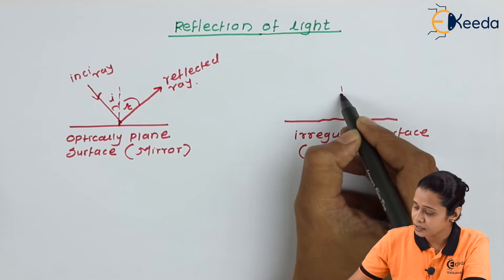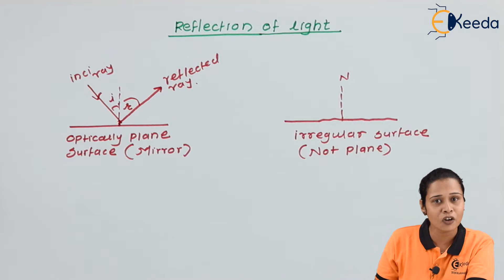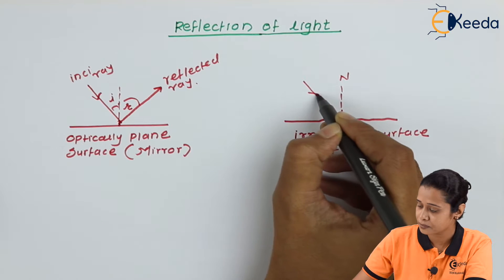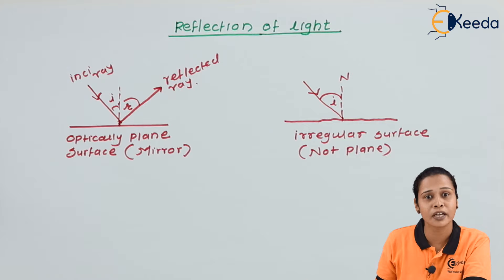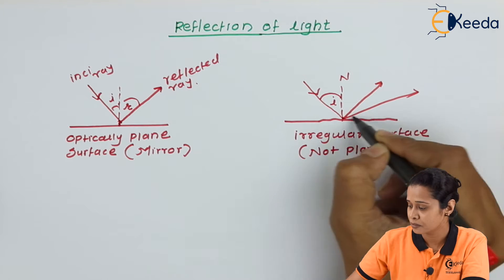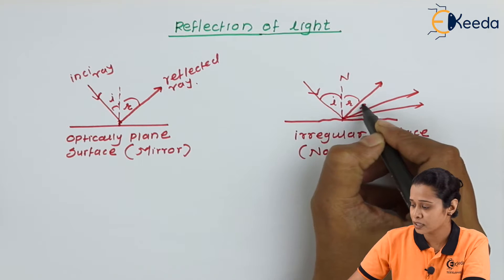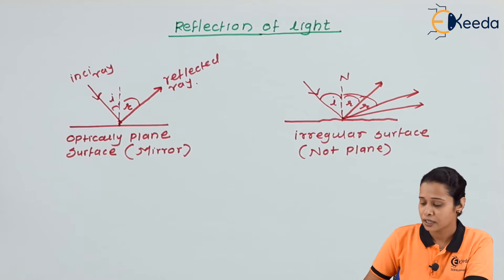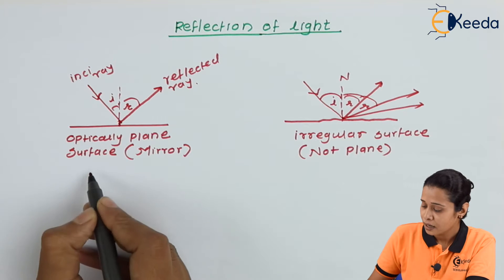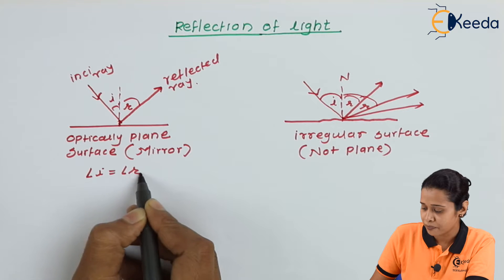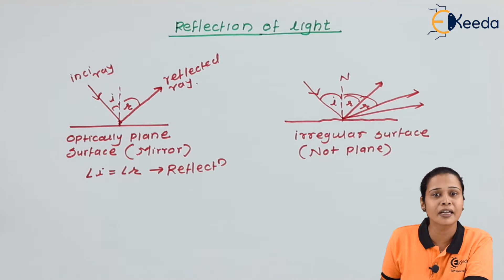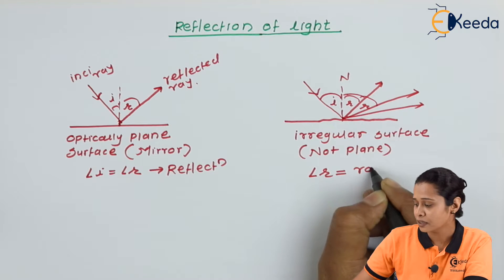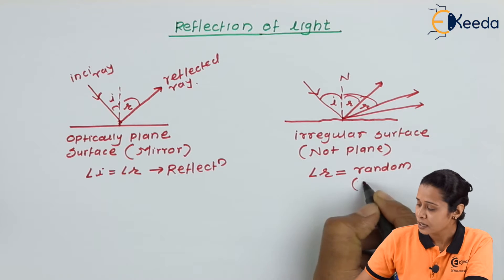We will say the angle of reflection is R. Now, in the second case, let us consider normal N. Again, the ray of light will be incident on the irregular surface making an angle I. But since the surface is not regular, the direction of the reflected ray will be different — it can go in various directions. If you have an optically plane surface, the reflection and incident angles will be the same. But if we have an irregular surface, the reflected ray can go in any direction, so the angle of reflection R can be random. This type of reflection is called irregular reflection.